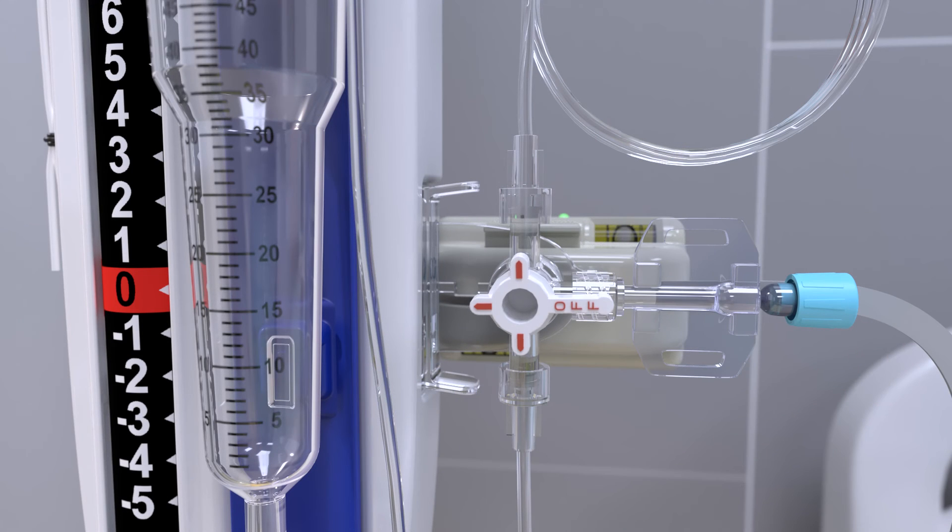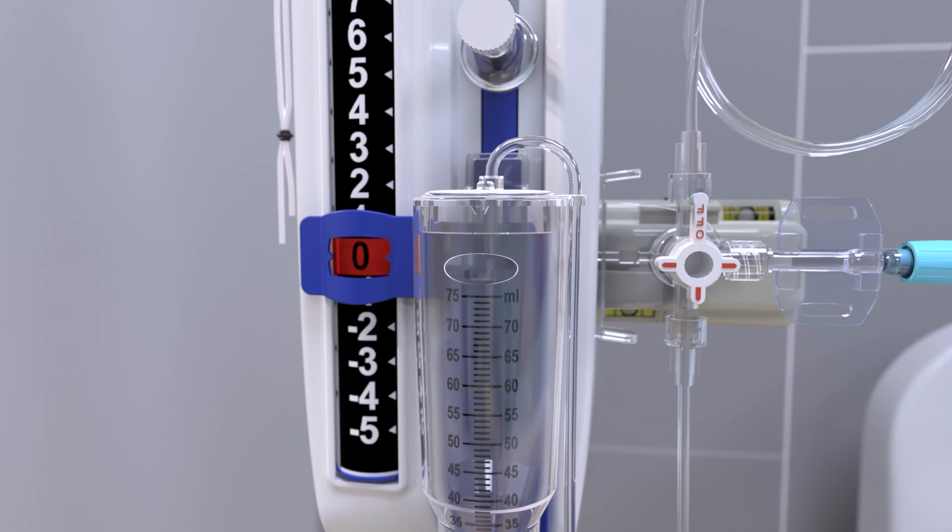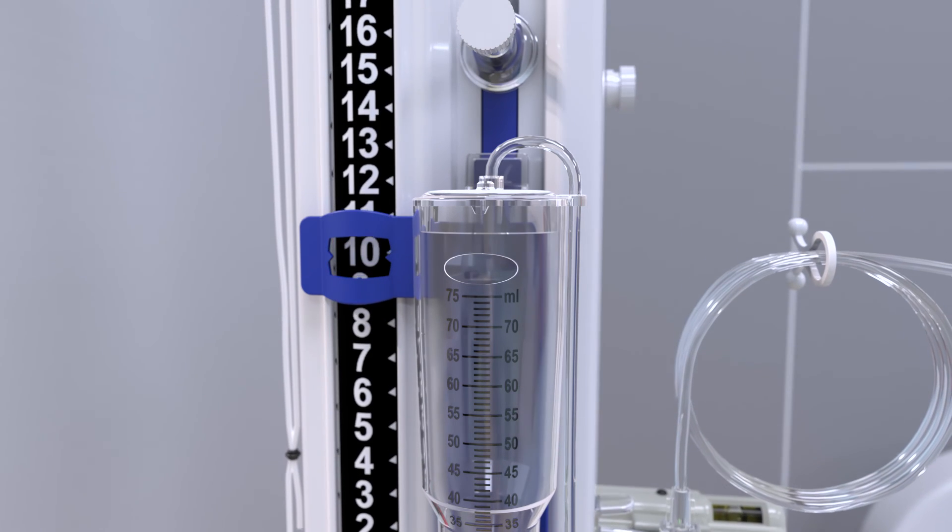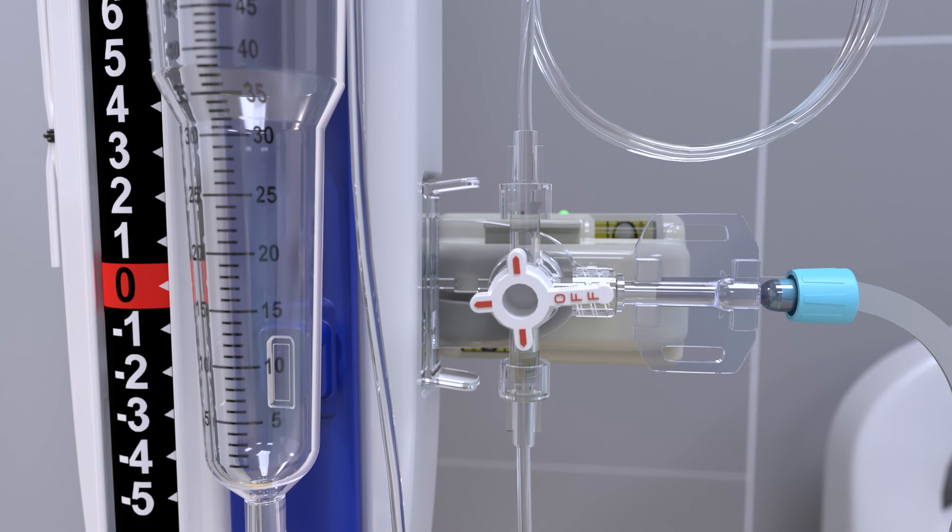Start by turning the main system stopcock off to the patient but allowing communication between the transducer and the drip chamber. Lower the drip chamber until the pressure indicator window is centered at zero on the pressure scale. Press the zero button on the bedside monitor. The pressure transducer is now zeroed to atmospheric pressure. Return the drip chamber to the ordered setting. Rotate the main system stopcock off to the transducer and on to the patient, allowing fluid to flow from the patient to the drip chamber.